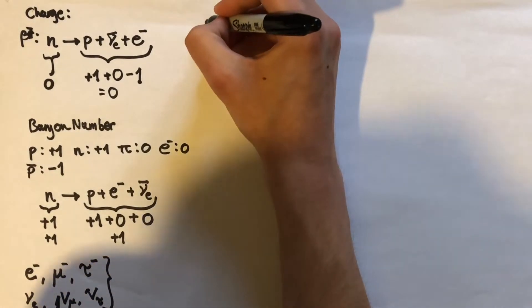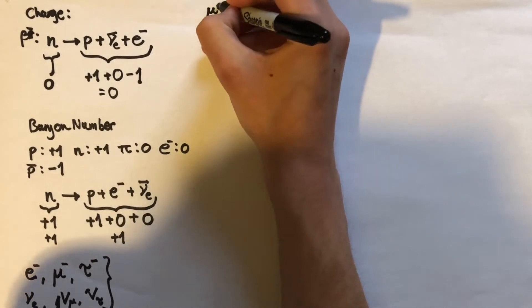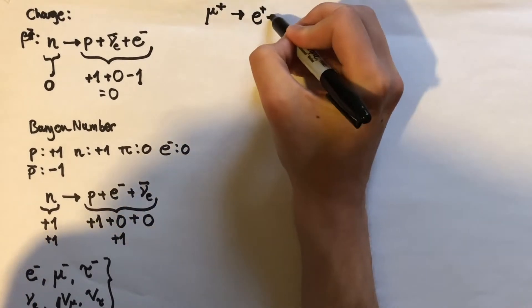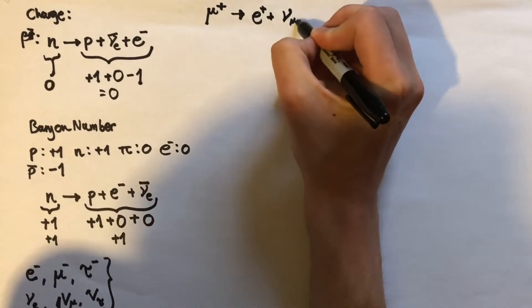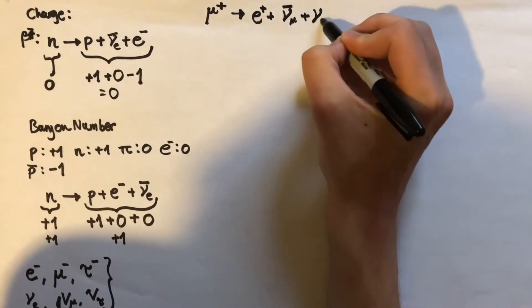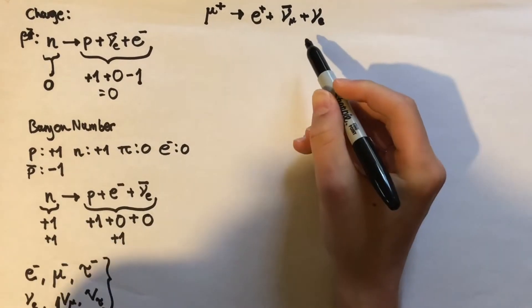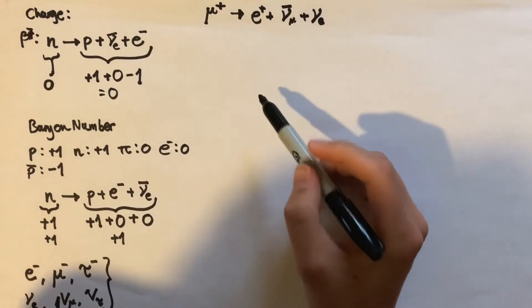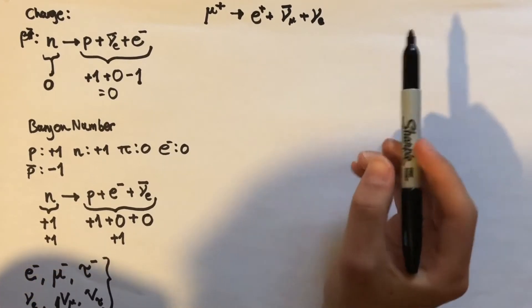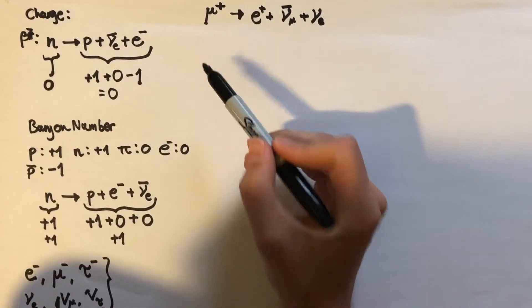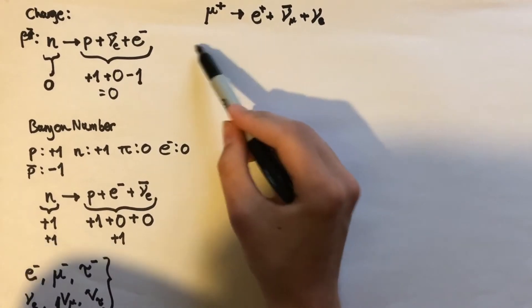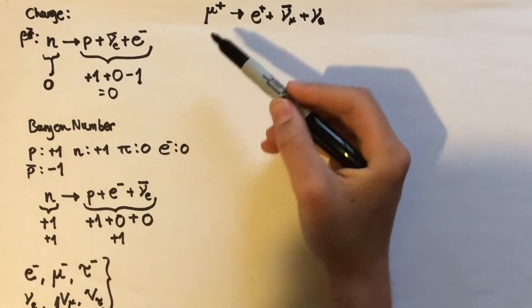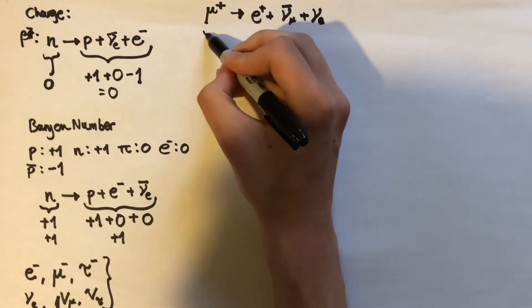Looking at mu lepton number: the electron and electron neutrino have nothing to do with muons, so they have a mu lepton number of zero. The muon and mu neutrino have a mu lepton number of plus one. The mu lepton number is a different quantity to the electron lepton number and so it's a different thing that has to be conserved separately. Let's take the reaction in which a positive muon decays into a positron plus an anti-mu neutrino and an electron neutrino.